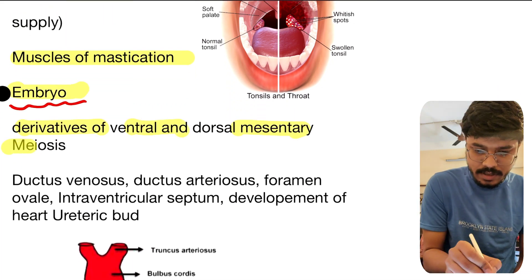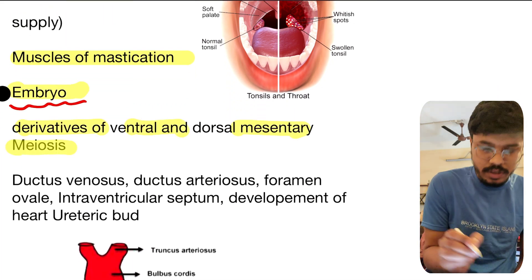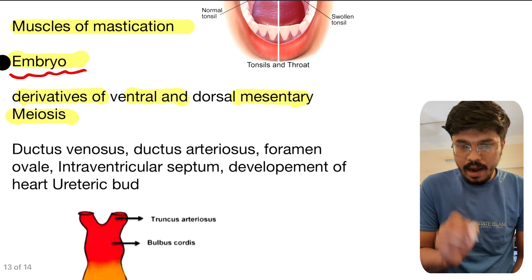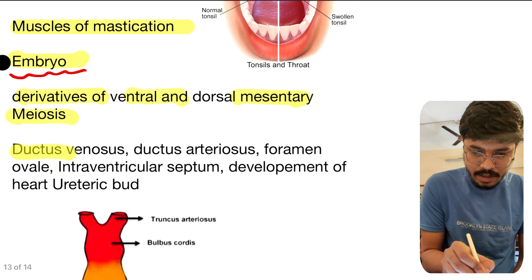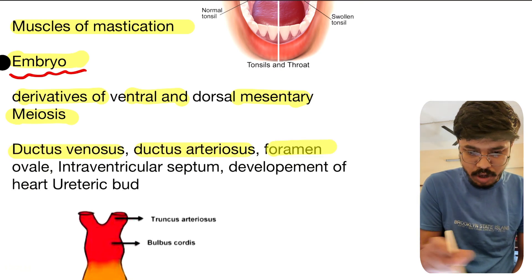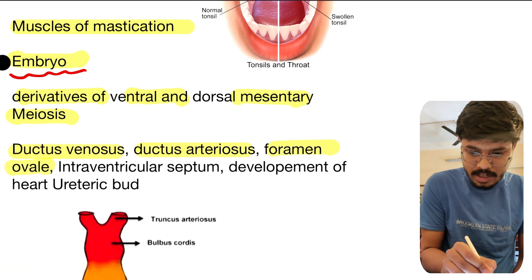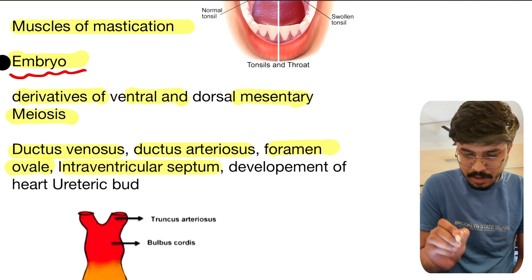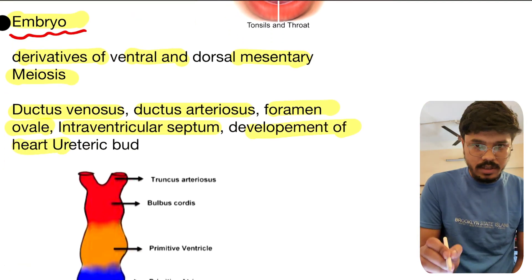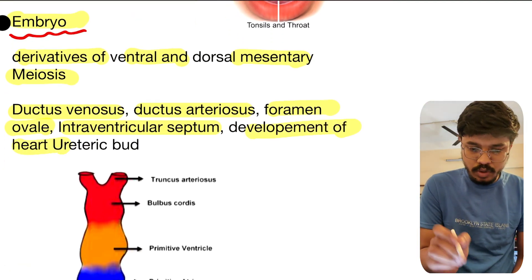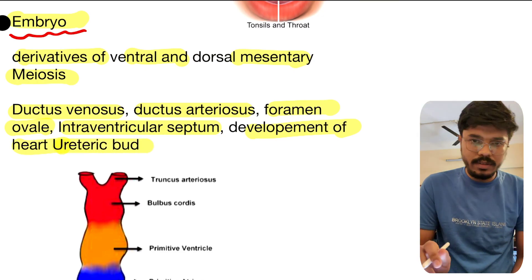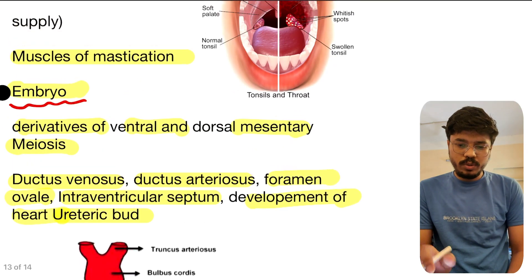Muscles of mastication, especially temporalis, lateral pterygoid, and masseter are very very important. From embryology: derivatives of ventral and dorsal mesentery. From heart development: ductus venosus, ductus arteriosus, foramen ovale, interventricular septum development, and overall development of the heart. Another very important topic is the ureteric bud.